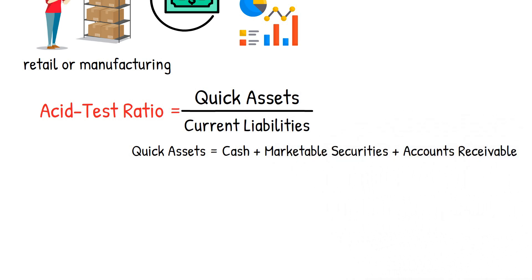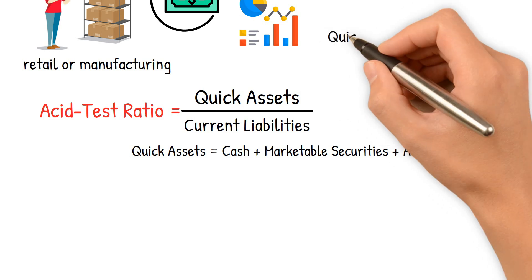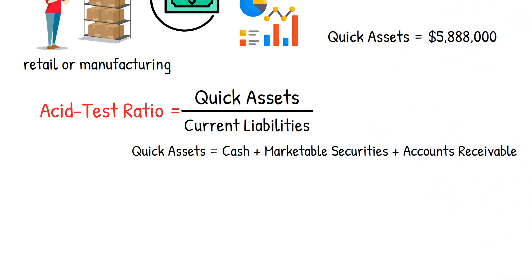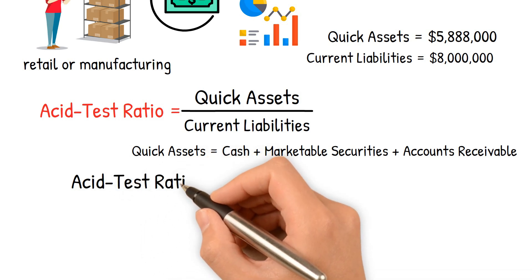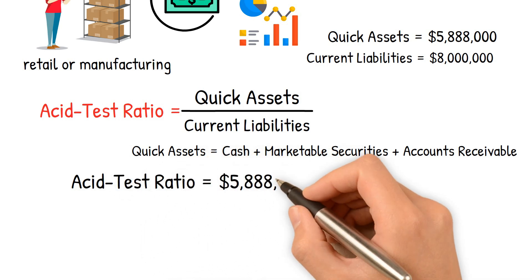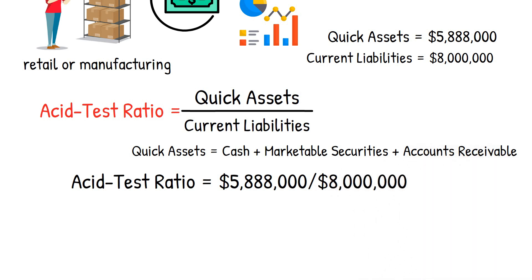For example, assume that the quick assets of ABC Corporation are $5,888,000 and its current liabilities are $8,000,000. We can calculate the asset test ratio as follows: asset test ratio equals quick assets divided by current liabilities, which equals $5,888,000 divided by $8,000,000, making the asset test ratio 0.736. Therefore, ABC Corporation's asset test ratio is 0.736, indicating the company may have difficulty meeting its short-term obligations.